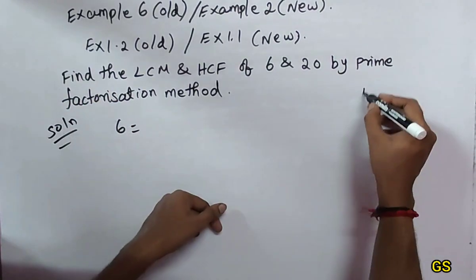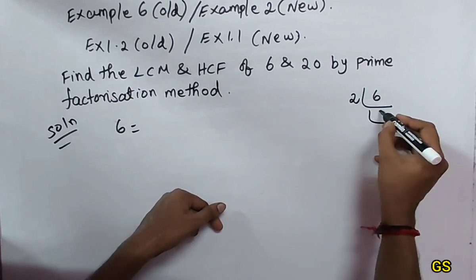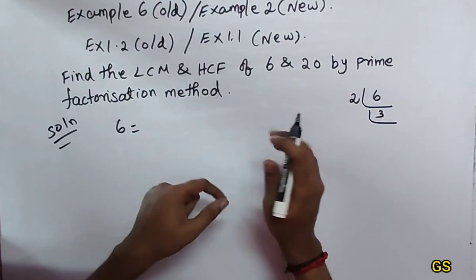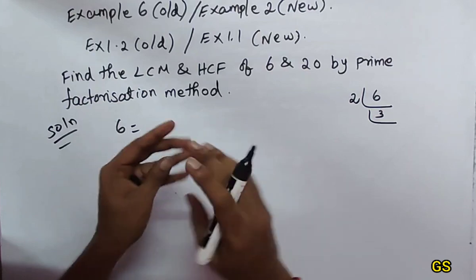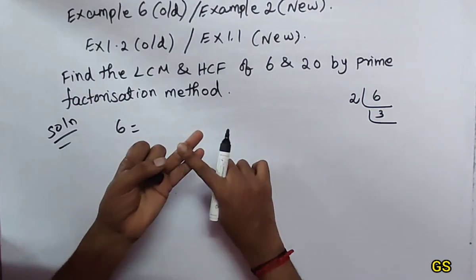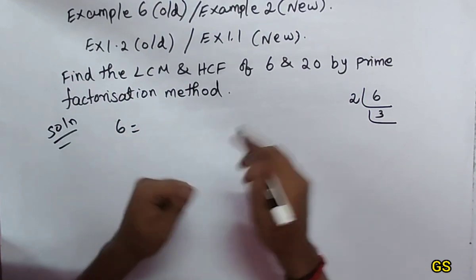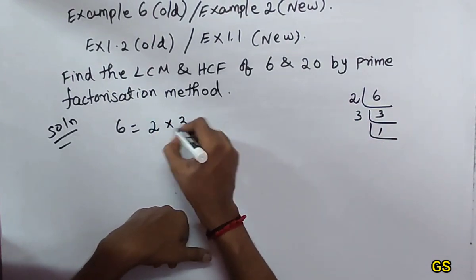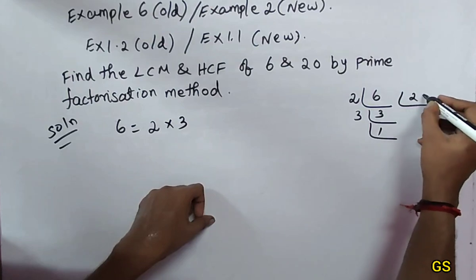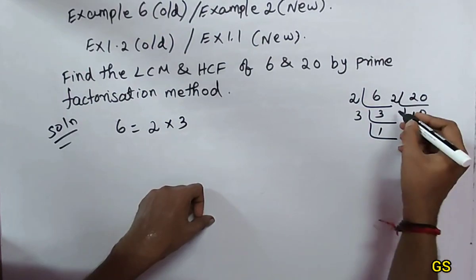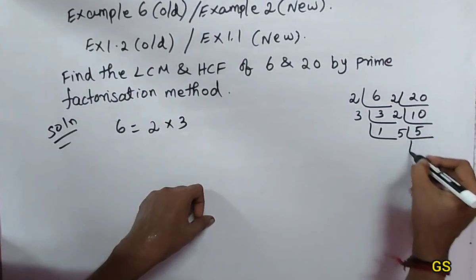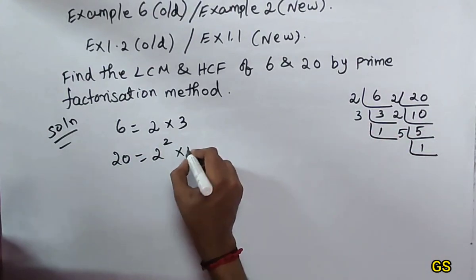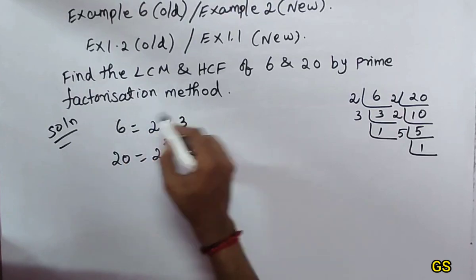For prime factorization, we start with prime numbers: 2, 3, 5, 7. For 6: divide by 2 once, then 3 once. So 6 equals 2 into 3. For 20: divide by 2 twice to get 10, then 5. So 20 equals 2 squared into 5.